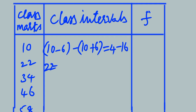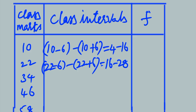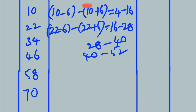For the second: 22 minus 6 is 16, 22 plus 6 is 28, giving 16 to 28. For the third: 34 minus 6 is 28, 34 plus 6 is 40, giving 28 to 40. Then 46 minus 6 is 40, 46 plus 6 is 52, giving 40 to 52. Then 58 minus 6 is 52, 58 plus 6 is 64, giving 52 to 64. Finally 70 minus 6 is 64, 70 plus 6 is 76, giving 64 to 76.